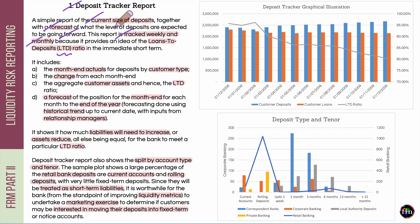This report tells us how the LTD ratio has behaved in the immediate short term — the actual values of this ratio in the past few months and the expected value of this ratio going forward in time. From a liquidity risk standpoint, the bank would want to maintain this LTD ratio close to a certain target number.